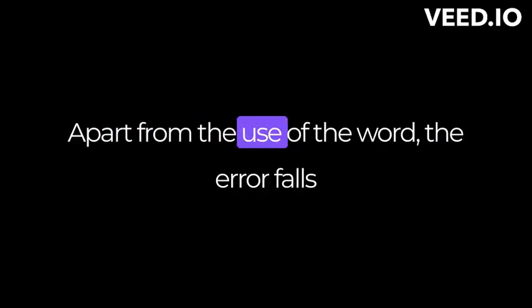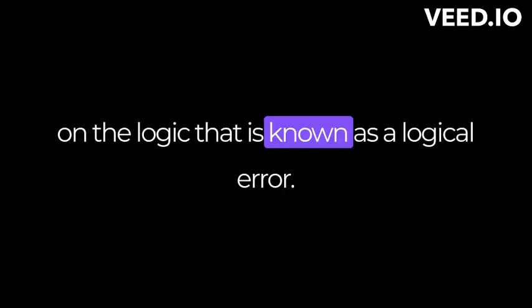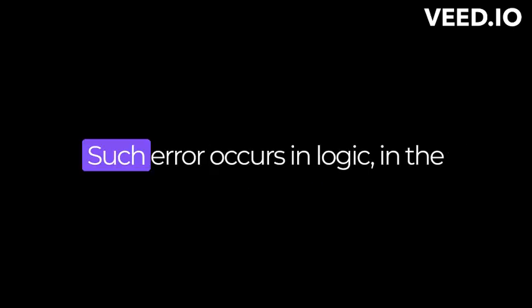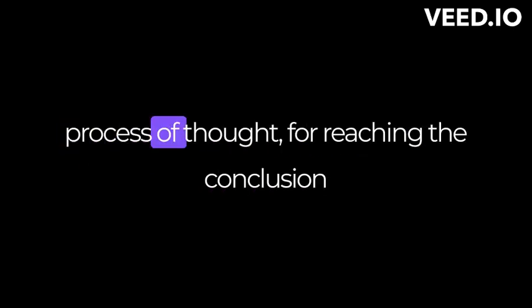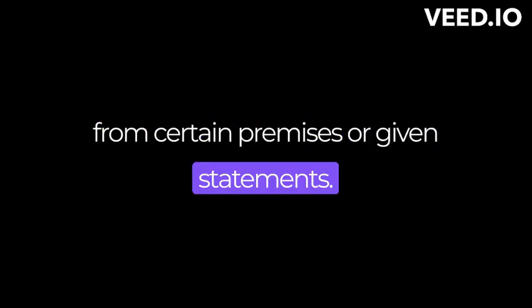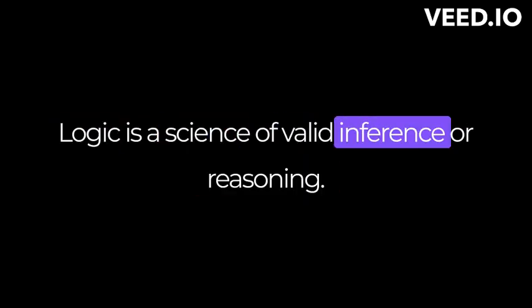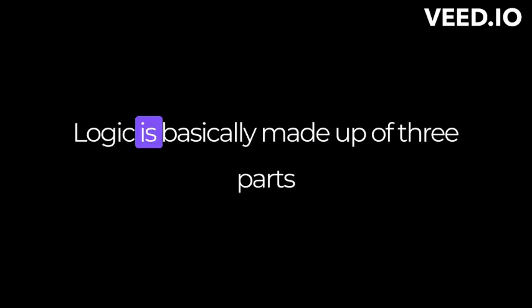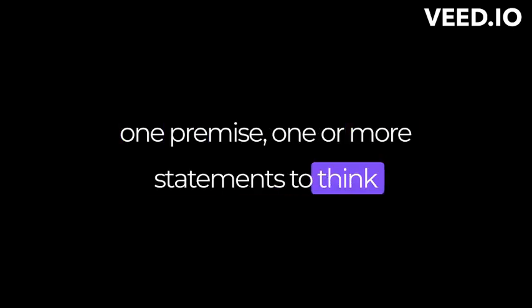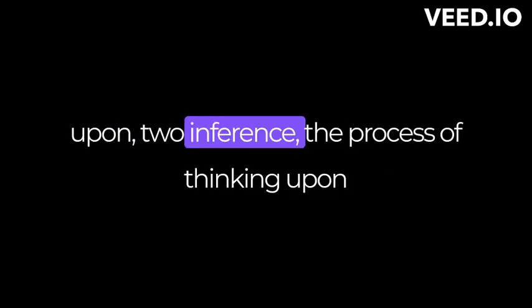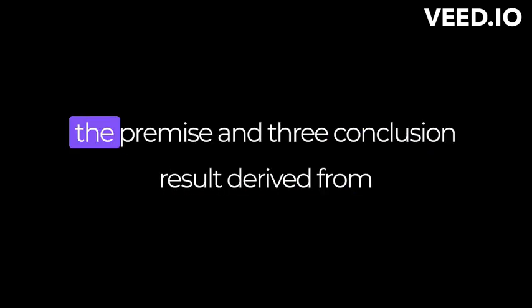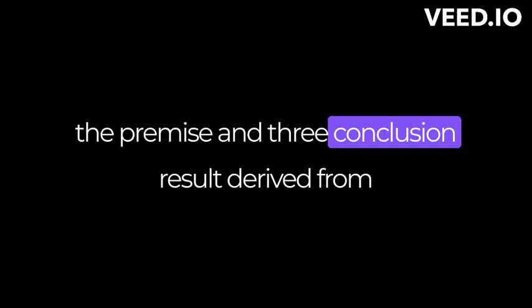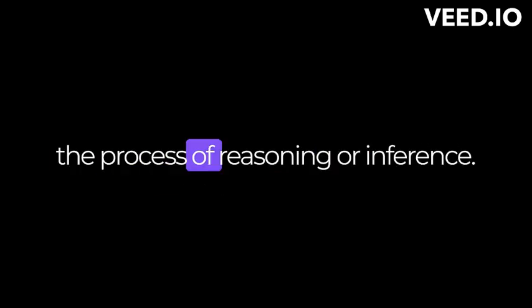Apart from the use of words, errors fall on logic, known as logical errors. Such errors occur in the process of thought when reaching a conclusion from certain premises or given statements. Logic is a science of valid inference or reasoning, and it can also study argument. Logic is basically made up of three parts: one, premise — one or more statements to think upon; two, inference — the process of thinking upon the premise; and three, conclusion — the result derived from the process of reasoning or inference.